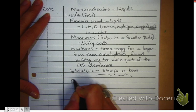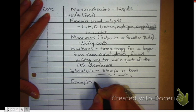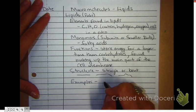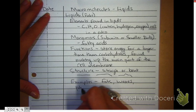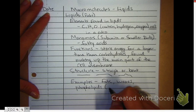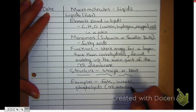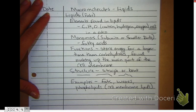And then our examples of lipids. We have fats. We have waxes. And then we have phospholipids. And those are the ones in the cell membrane. They're the cell membrane lipids. So we'll put that in parentheses.